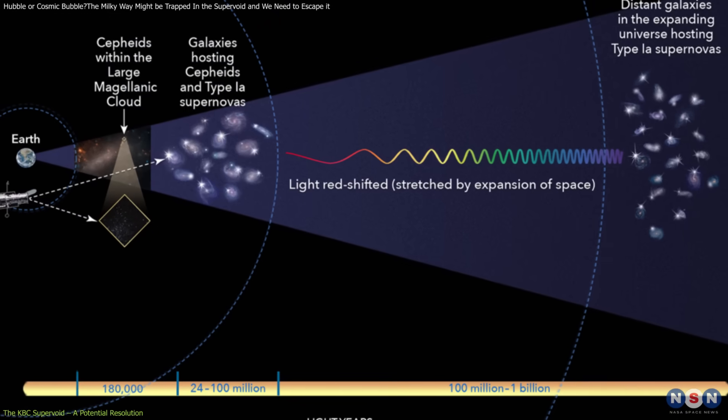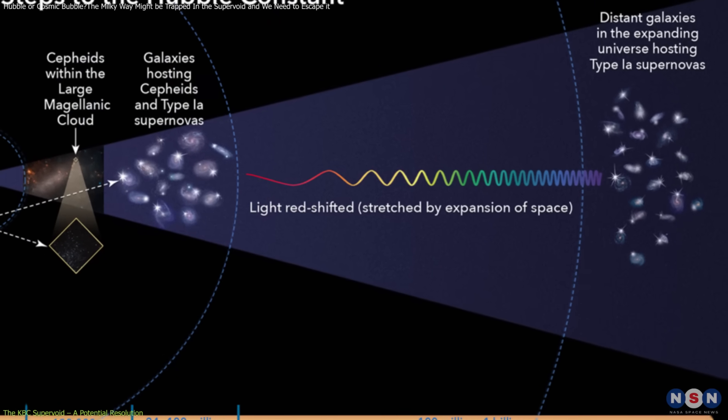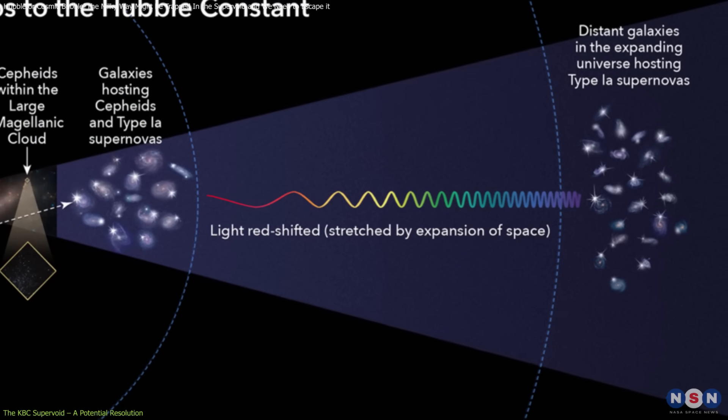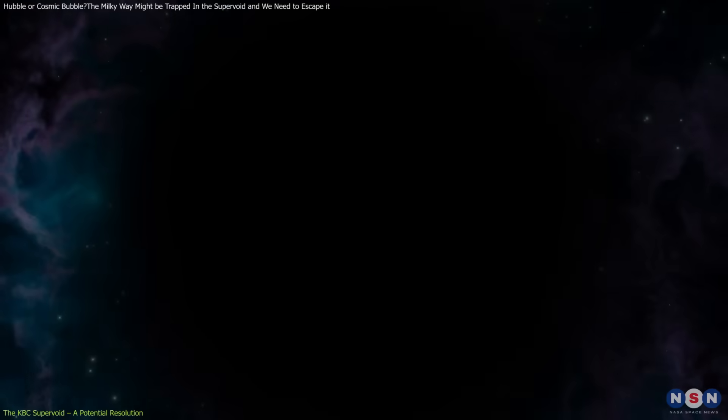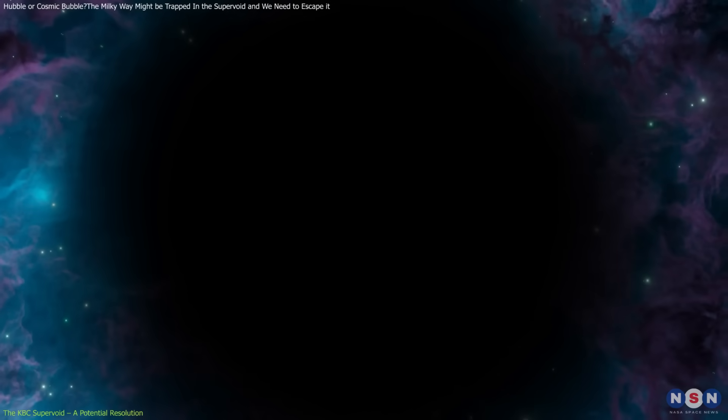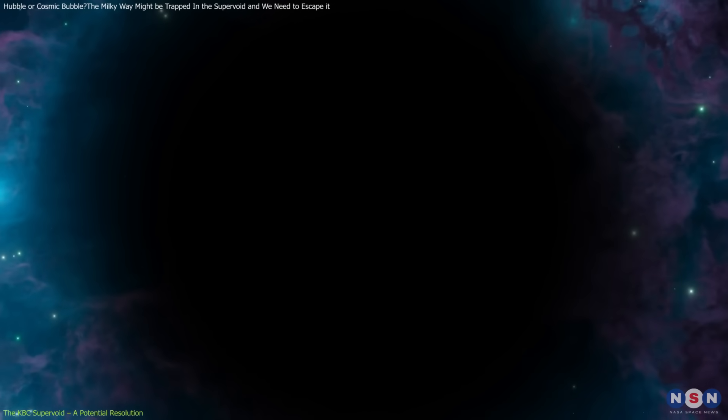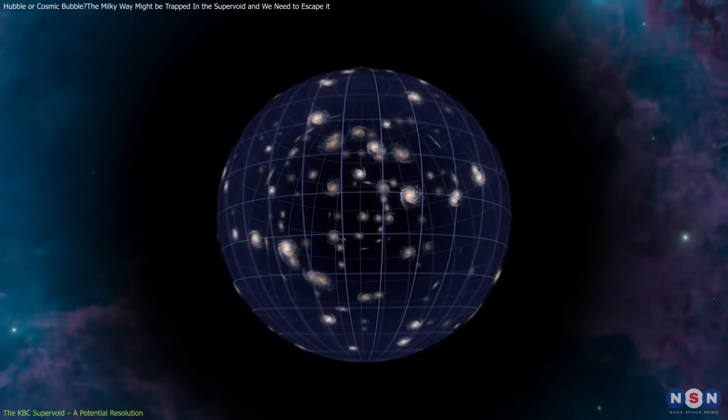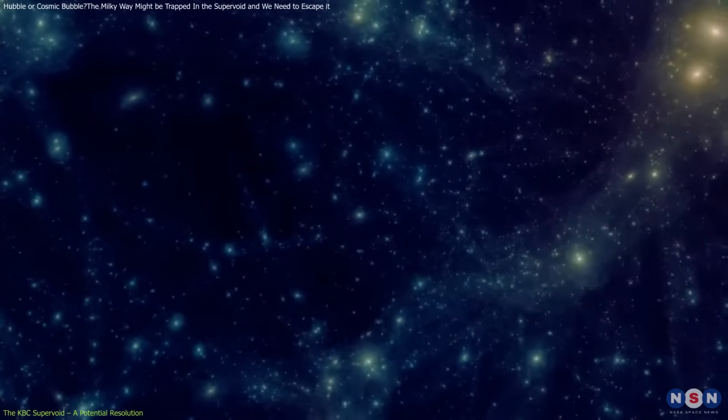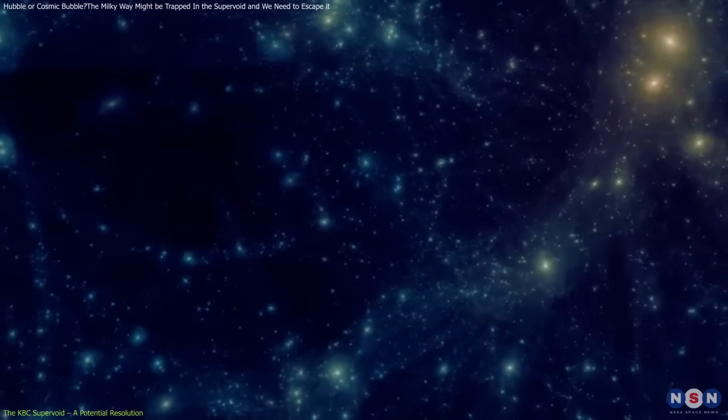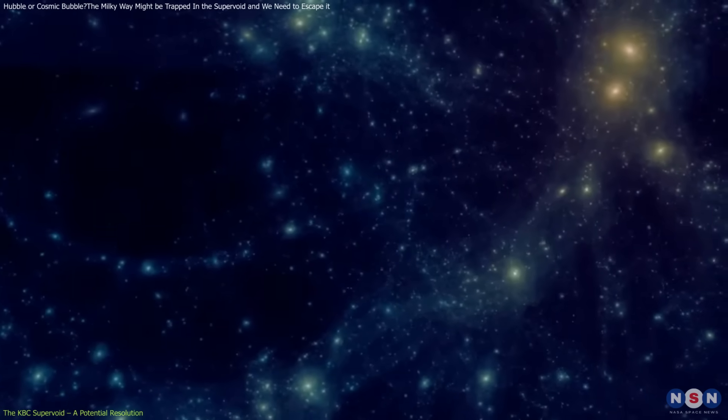As a result, calculations of the Hubble constant based on these measurements may be skewed, leading to the discrepancy observed in the Hubble tension. In essence, the KBC supervoid could act as a cosmic magnifier, exaggerating the expansion rate for observers within it. This hypothesis highlights the need to consider the large-scale structure of the universe when interpreting local measurements.